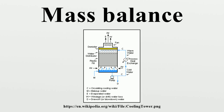For example, mass balance theory is used to design chemical reactors, to analyze alternative processes to produce chemicals, as well as to model pollution dispersion and other processes of physical systems. Closely related and complementary analysis techniques include the population balance, energy balance, and the somewhat more complex entropy balance. These techniques are required for thorough design and analysis of systems such as the refrigeration cycle.